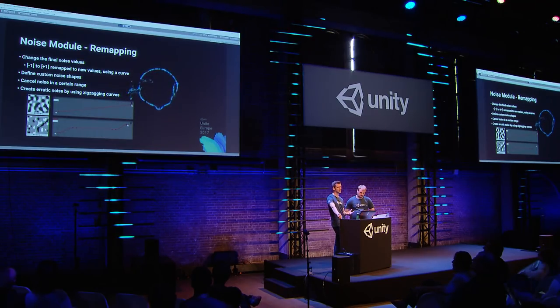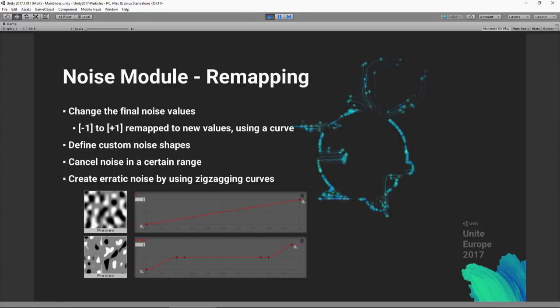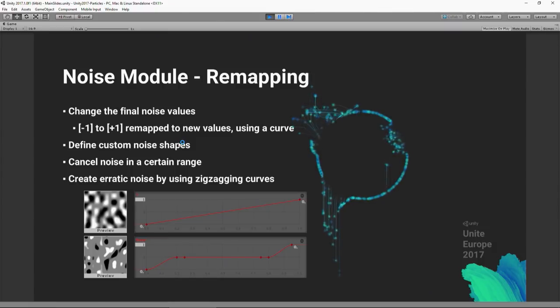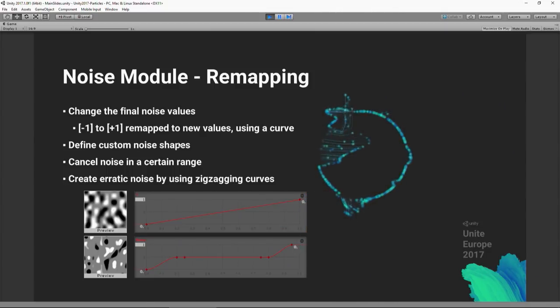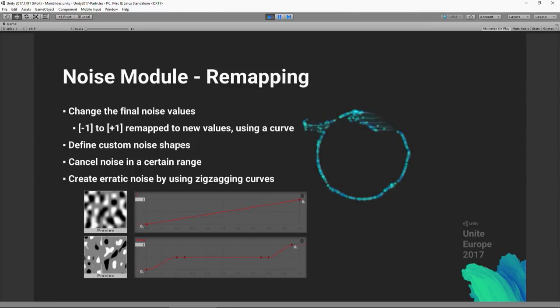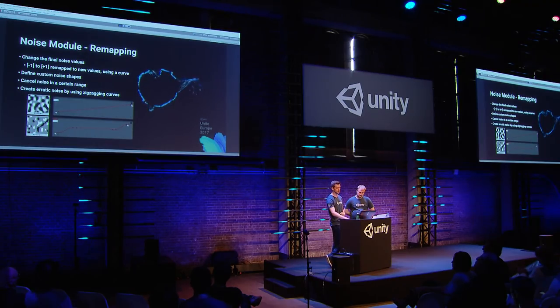A final noise feature is remapping, which lets you change the final noise value. Perlin noise has a familiar look visible on the preview texture, but by remapping you can change the shape of the noise. One use case is canceling out noise in a certain range so some parts of the circle aren't affected. Another is creating a zigzag curve for very erratic, unpredictable noise.